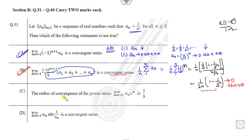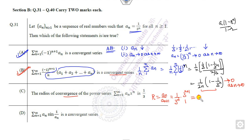To find the radius of convergence, we use A_N / A_{N+1}. Substituting the values: A_N is 1/3^N and A_{N+1} is 1/3^{N+1}. The answer is 3, which is not equal to 1/3, so this option is wrong.